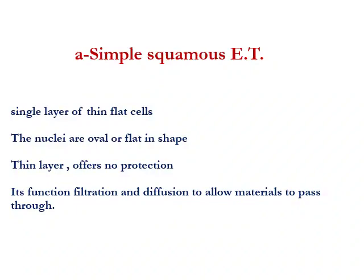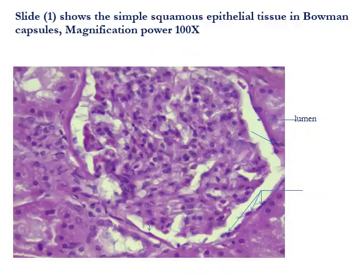The simple squamous epithelial tissue is composed of one layer of flat cells with a flat nucleus parallel with the surface of the cell. It is a very thin layer and offers no protection but allows material to pass through it. We can see simple squamous epithelial tissue in many locations, like in Bowman's capsule in the kidney, and lining the walls of blood and lymphatic vessels, which is called endothelium.